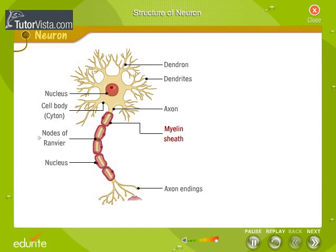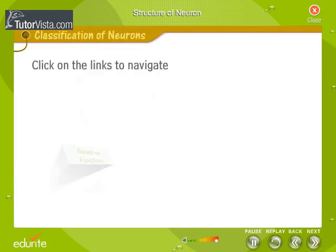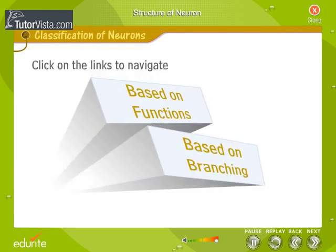The nodes of Ranvier are the regularly spaced gaps in the myelin sheath. Electrical excitation occurs only at the nodes of Ranvier, so that signals hop along these fibers rather than propagating smoothly, as they do in axons that lack a myelin sheath.